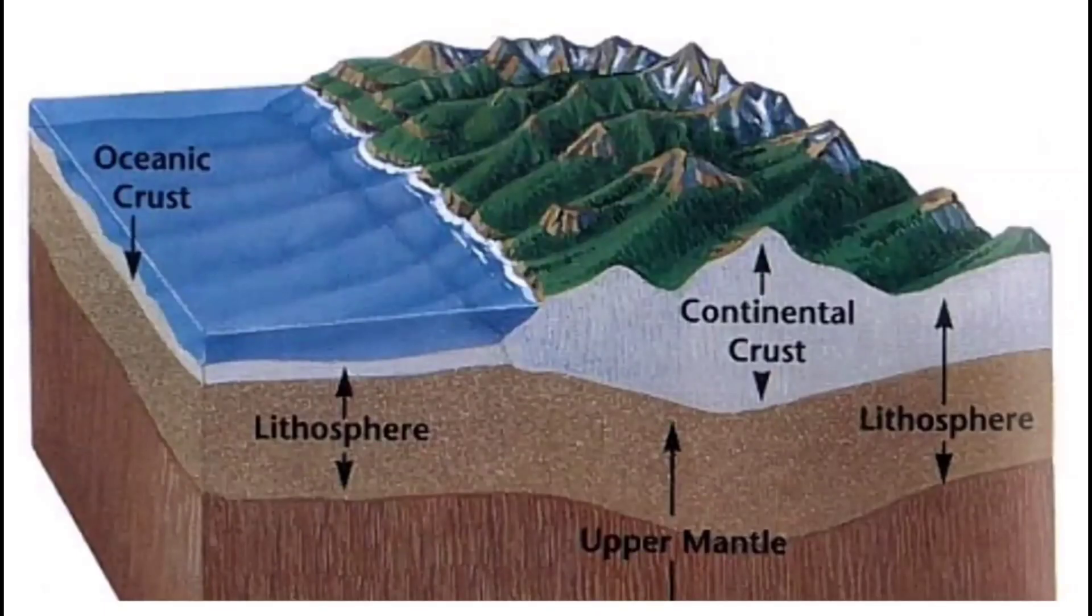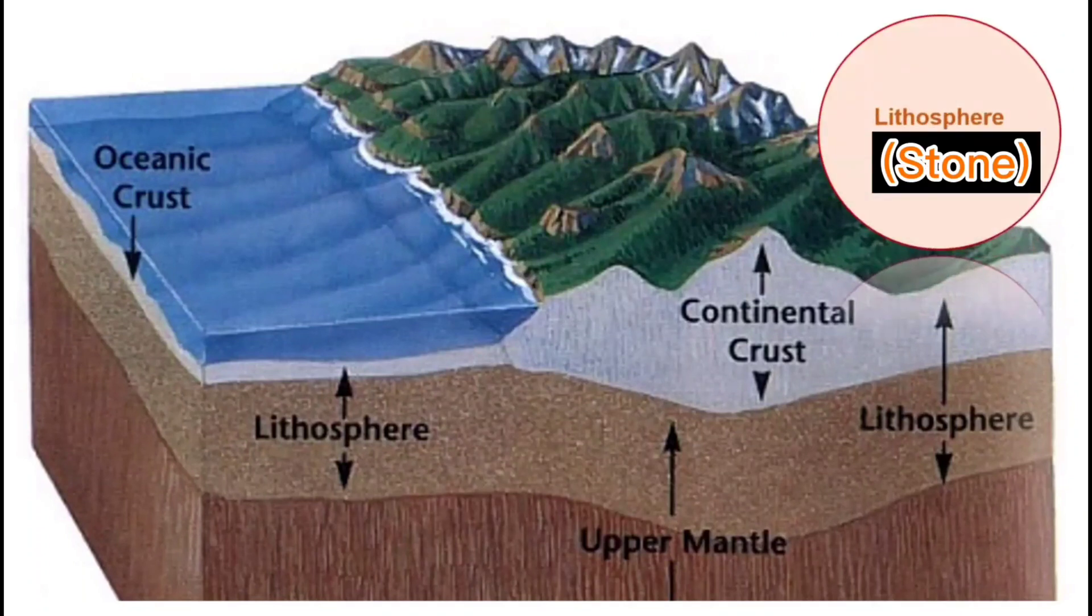Earth's crust and upper portion of the mantle makes up the lithosphere, which from the Greek word lithos means stone. It includes rocks, sediments, soils, and surface landforms.